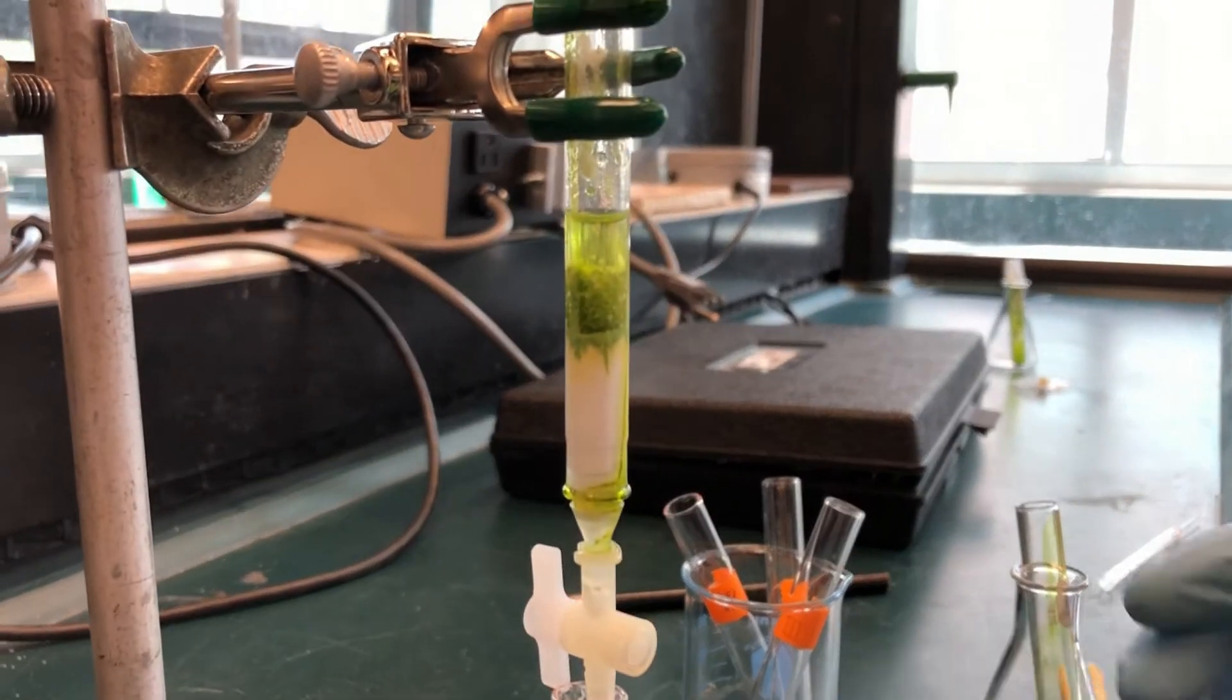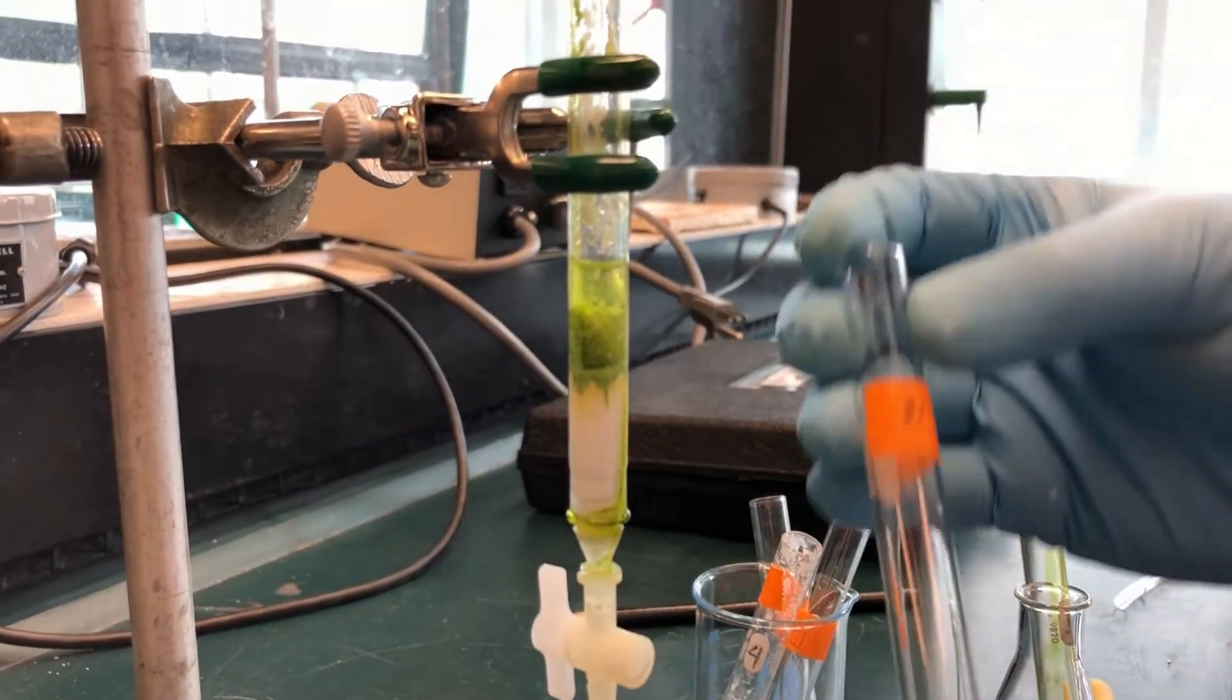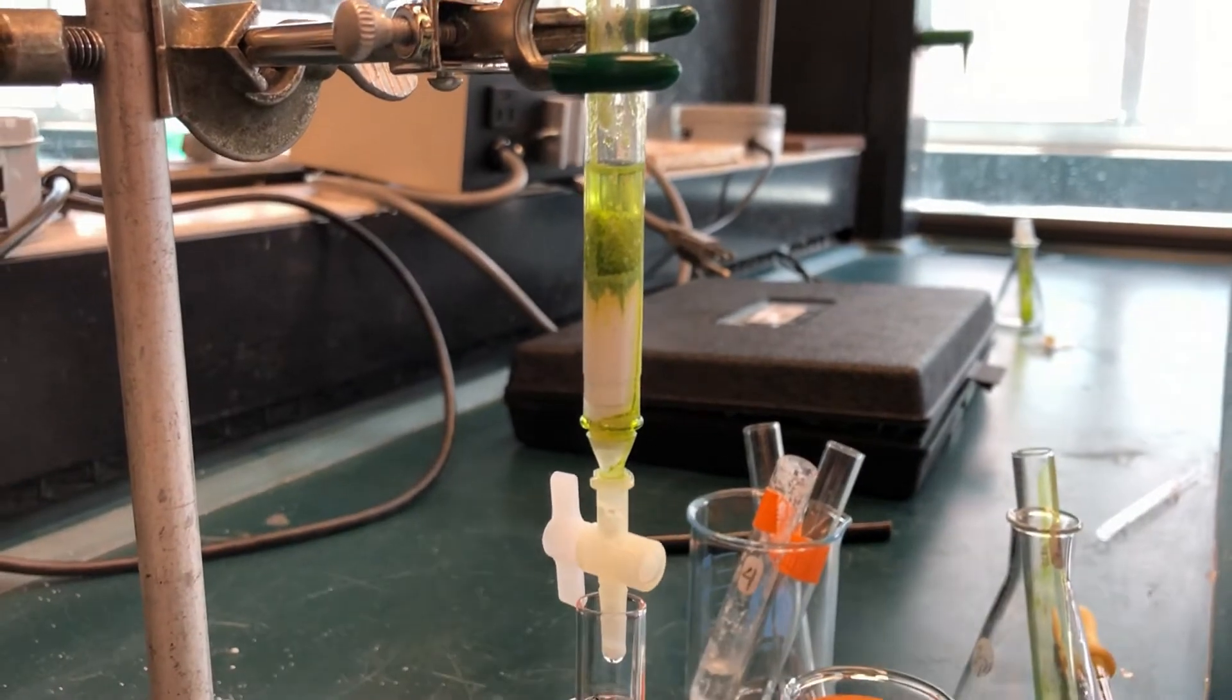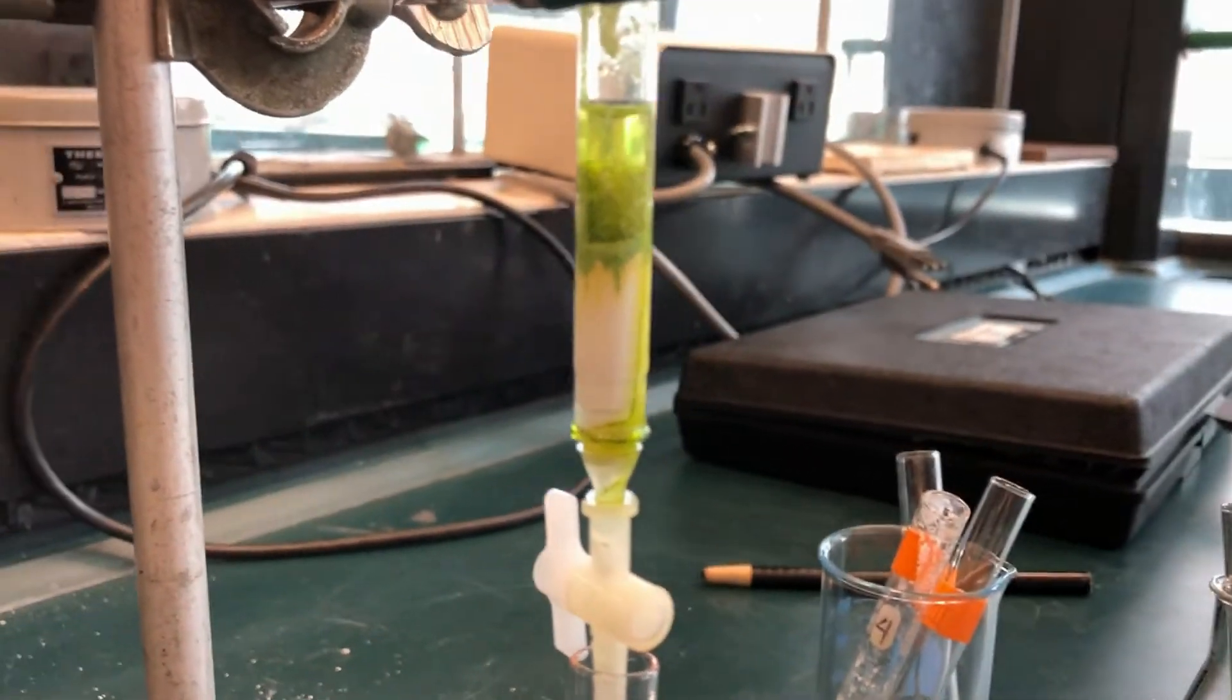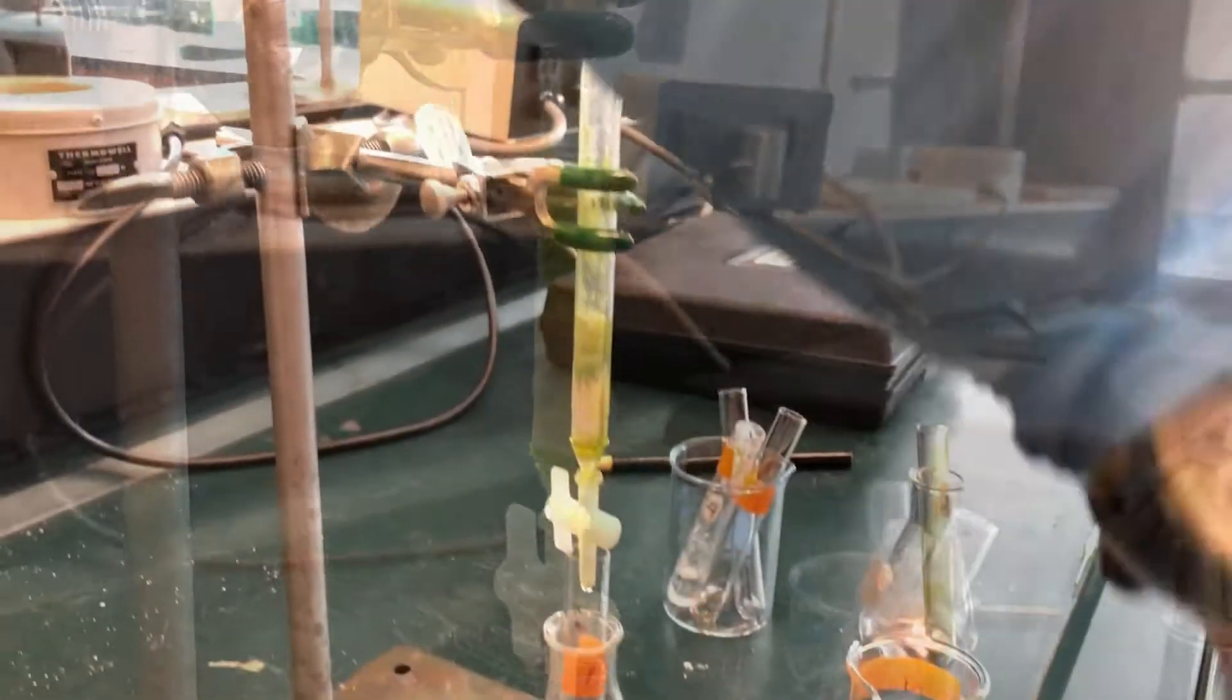If the yellow band does not separate from the green band, then change to a more polar solvent, such as the 70-30 petroleum ether until the yellow band passes through the column.